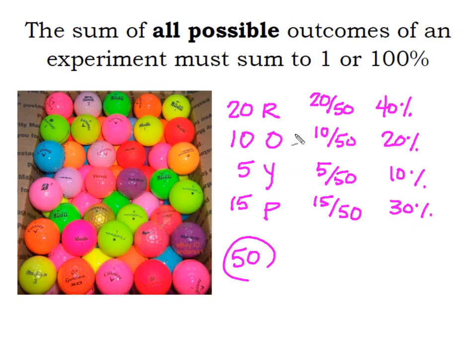So these were all of my possible outcomes: red, orange, yellow, or pink. And the sum of all these probabilities, 50 over 50, which is the same as saying 100%, which is the same thing as 1. So the sum of the probability of all possible outcomes for a probability experiment will sum to 1 or 100%.